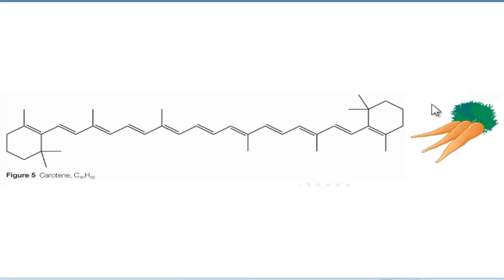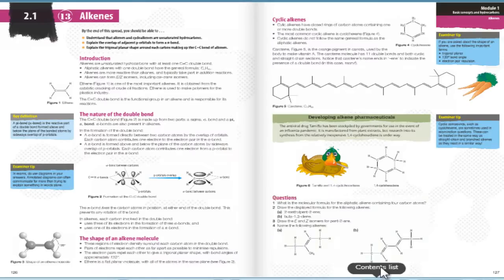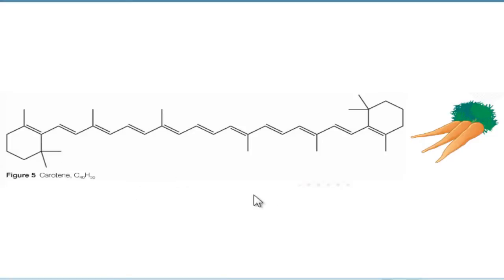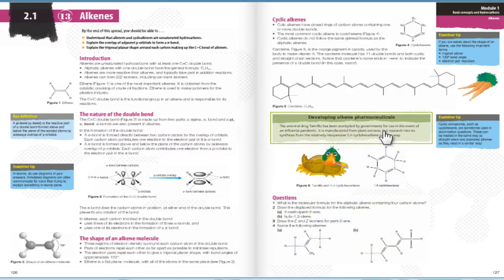We look at carotene now. It's a very long alkene with two cyclic ends. Cyclic alkenes have closed rings of carbon atoms containing one or more double bonds. The most common cyclic alkene is cyclohexene. Cyclic alkenes do not follow the same general formula as aliphatic alkenes. Carotene is used by the body to make vitamin A. The carotene molecule has 11 double bonds and both cyclic and straight chain sections. Carotene's name ends in -ene to indicate the presence of a double bond. It has lots and lots of bonds. Just look at them all.